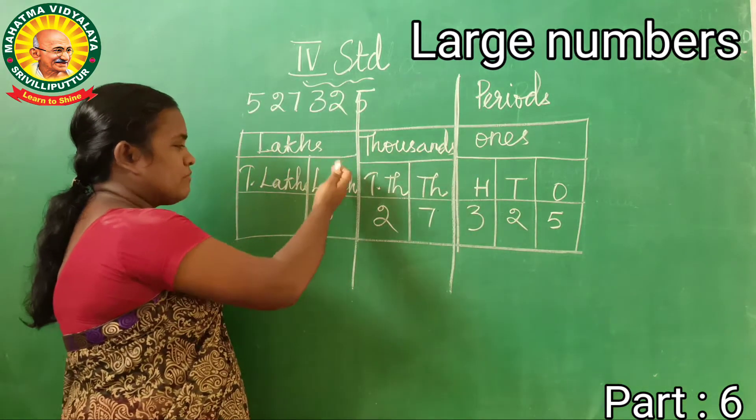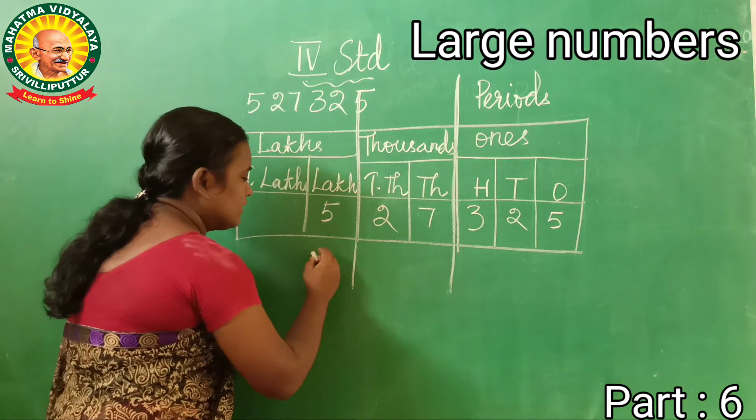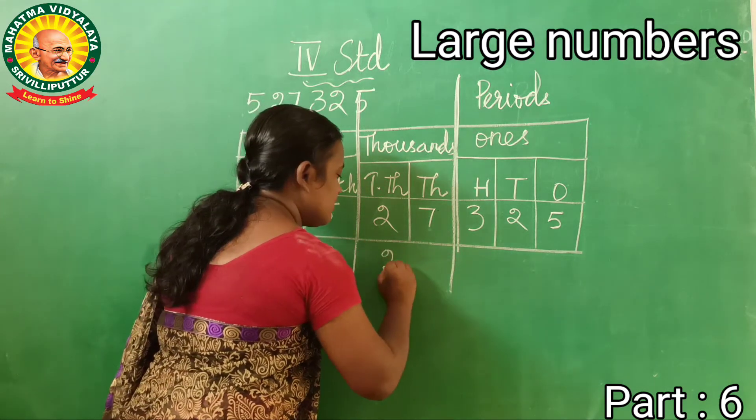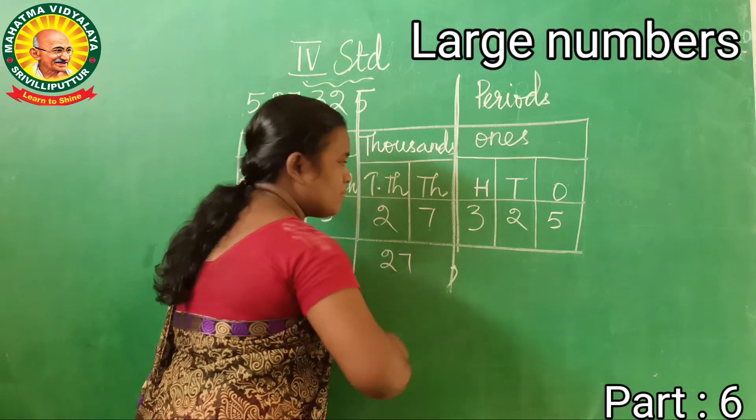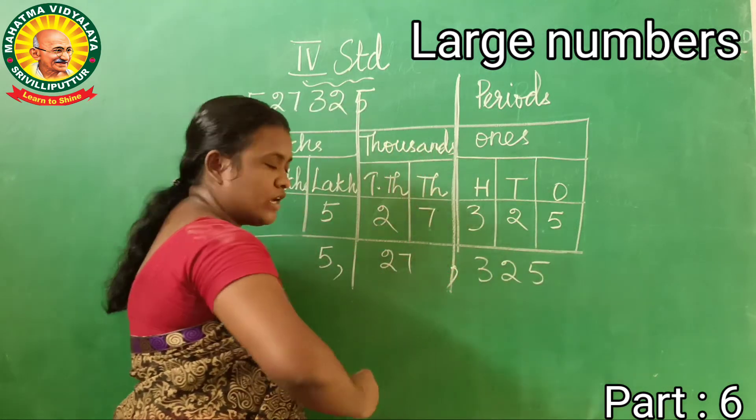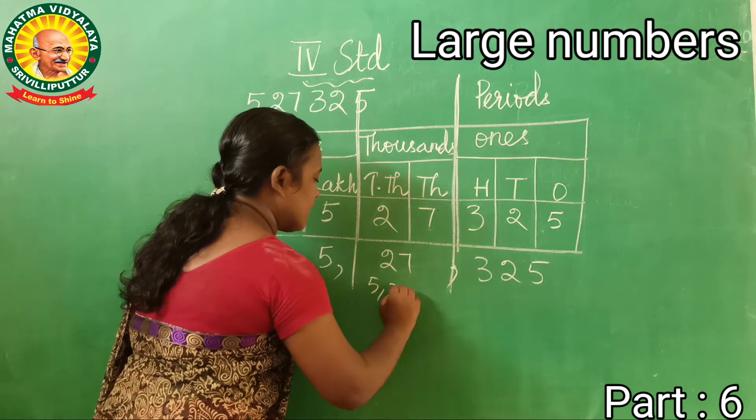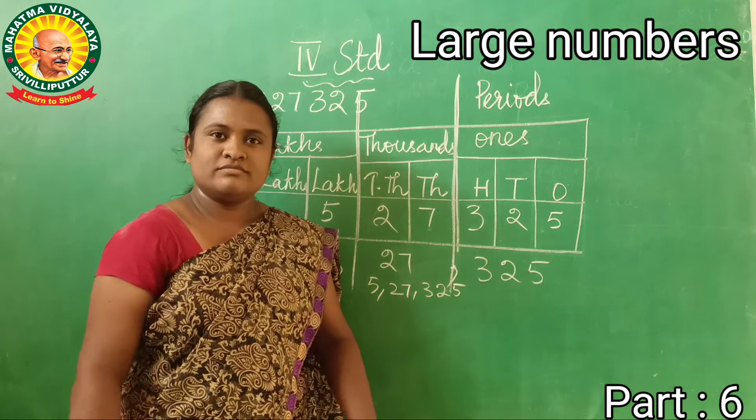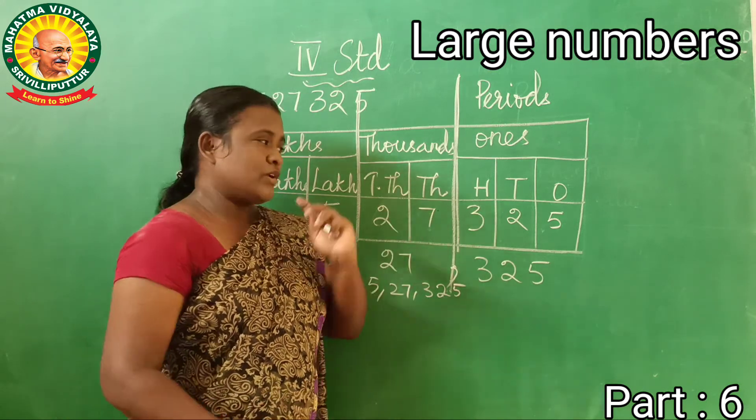Yes, this is separation. Now after the lakh period, we have to put a comma. That is five lakhs. The next one is twenty-seven thousand, comma. And the next one is three hundred and twenty-five. Is it easy? Do you understand this?